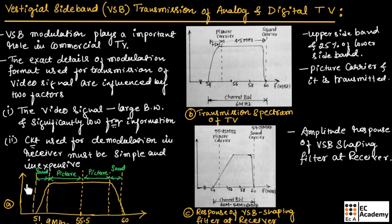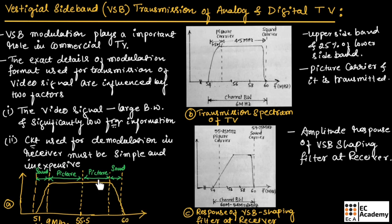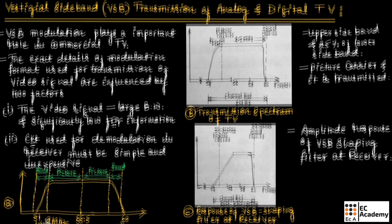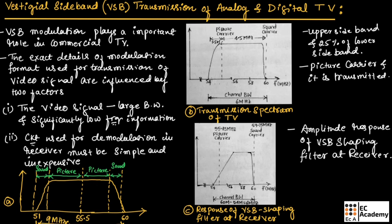This figure shows the spectrum of a television signal which consists of upper sideband as well as lower sideband. Whatever information is available at the upper sideband, the same information is available at the lower sideband. That is why, instead of transmitting both sidebands, we use vestigial sideband to transmit one complete sideband along with the traces of the other sideband to save bandwidth. The actual bandwidth of the spectrum of a television signal is 9 megahertz.